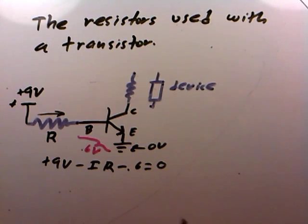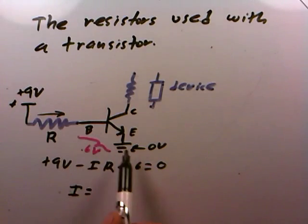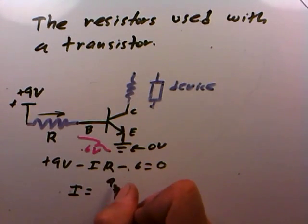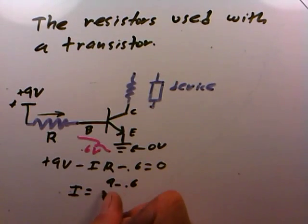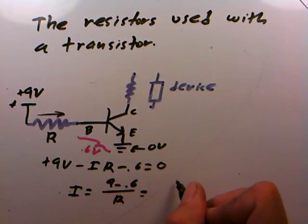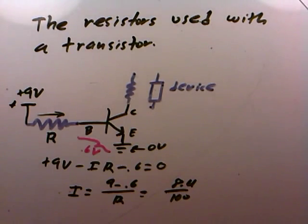So why don't we just solve this algebraically for I, the current that is flowing from the battery through the resistor, through the base, and out of the emitter right there. We'd get something like 9 minus the 0.6 over R. And now what we did in the previous videos is usually we set R equal to something like 100 Ohms. So this is going to be 8.4 on the top divided by 100 Ohms on the bottom.